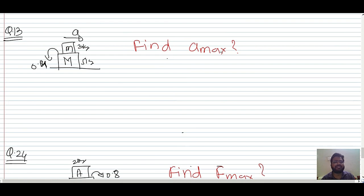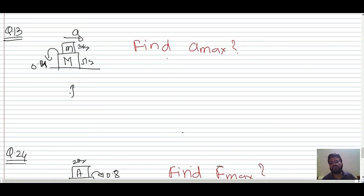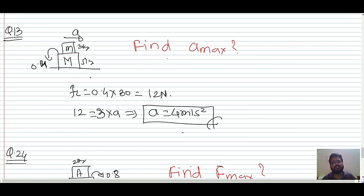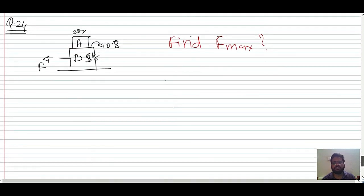Problem 3: Find the maximum acceleration so that the two blocks move together. Unlike the previous problems where the applied force was given, here we calculate force from the limiting friction. Limiting friction = 0.4 × 30 = 12 N. So 12 = 3 × a, giving maximum acceleration a = 4 m/s².